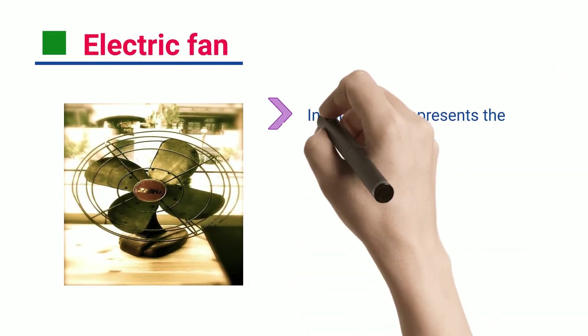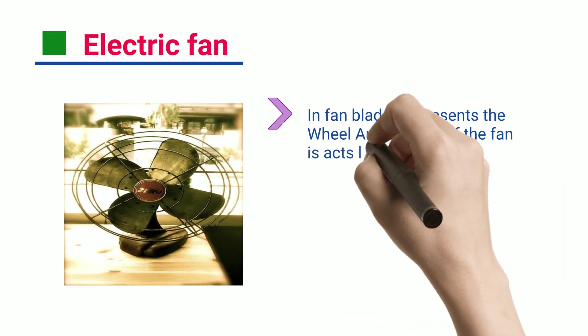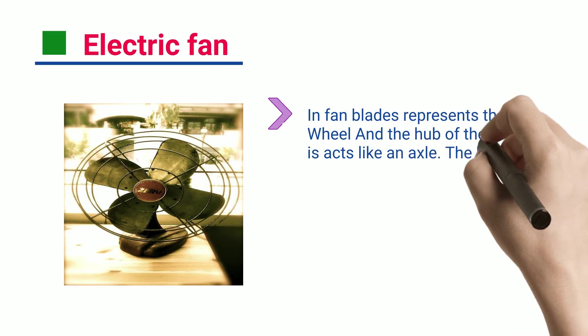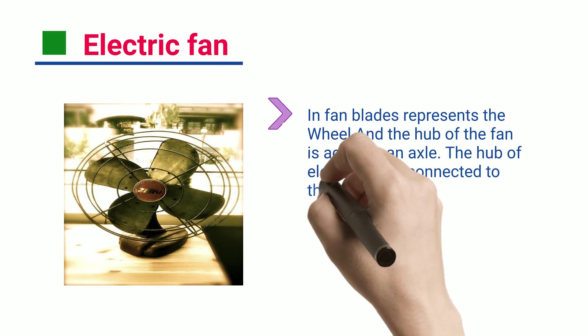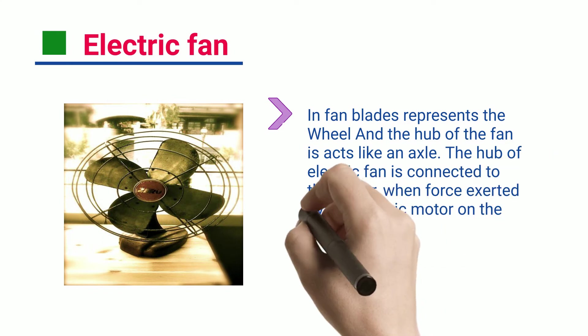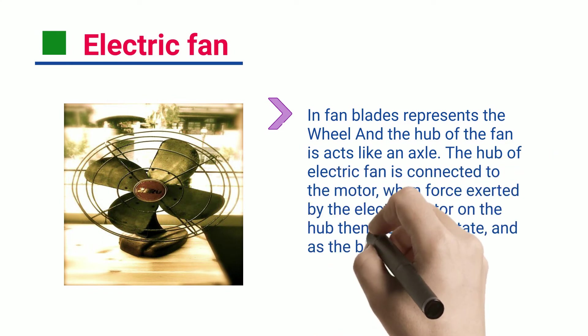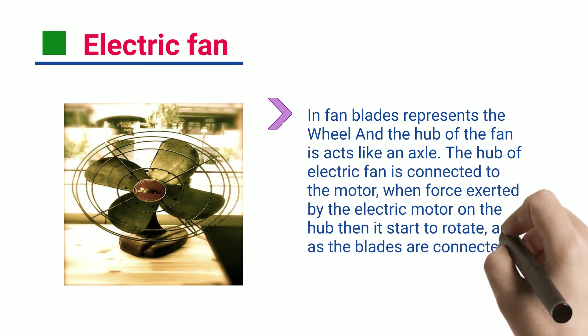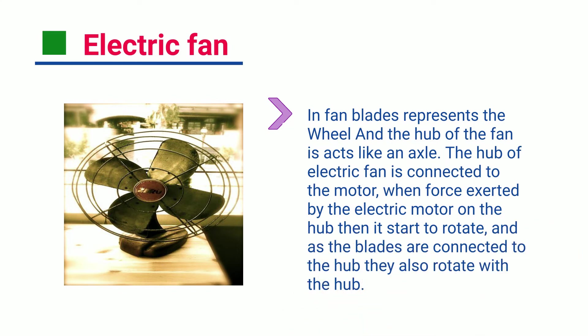Electric Fan. In a fan, the blades represent the wheel, and the hub of the fan acts like an axle. The hub of the electric fan is connected to the motor. When force is exerted by the electric motor on the hub, it starts to rotate, and as the blades are connected to the hub, they also rotate with the hub.